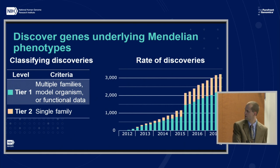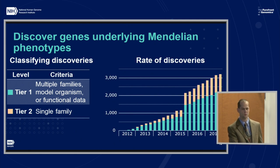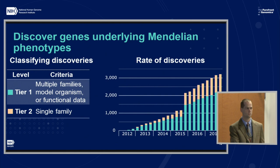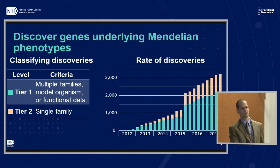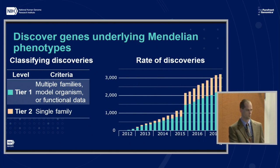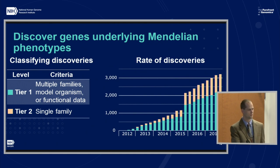There are about 1,000 tier two discoveries at present, and obviously we'd like to move these to tier one. These are rare diseases — more samples are hard to come by, so model organisms are a good approach in some cases. A discovery could be an association between a gene and a phenotype. If there are multiple genes underlying similar phenotypes, that counts as multiple discoveries. So this is not a count of unique genes or unique phenotypes — it's a combination of the two.